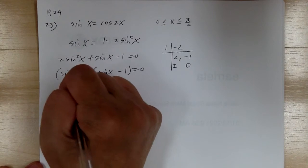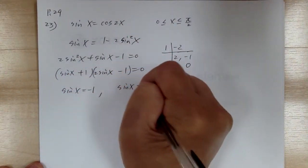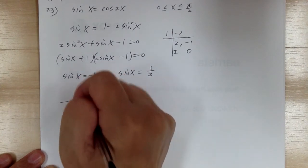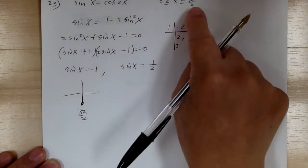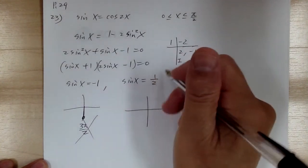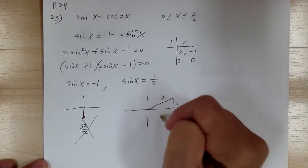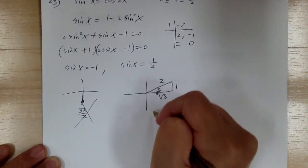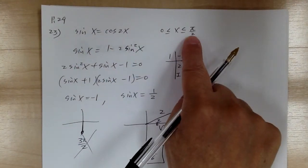From the factoring, we get sine x equals negative 1 and sine x equals 1 over 2. For sine x equals negative 1, when you draw the picture, that gives 3π/2, which is outside the range, so it's no good. For sine x equals 1/2, that gives x equals π/6. Therefore the answer is π/6. You have to pay attention to the boundary.